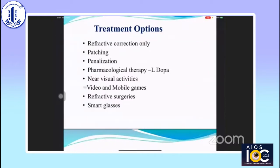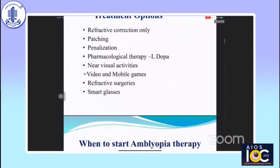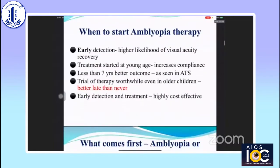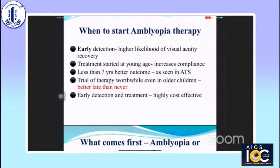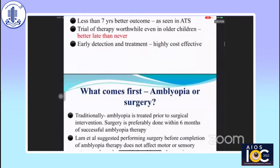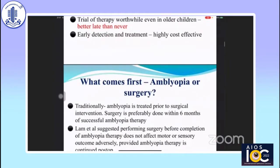However, none of them is foolproof. When should we start amblyopia therapy? It should be tried at the earliest, but better late than never. Which comes first — amblyopia treatment or surgery? Classical teaching is that amblyopia should be treated prior to surgical intervention, and surgery should preferably be done within six months of successful amblyopia therapy.